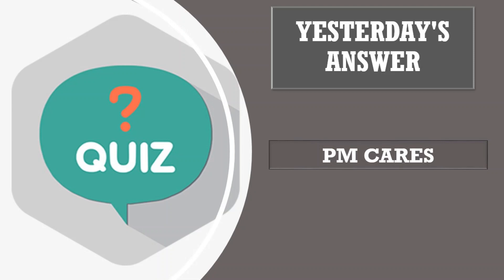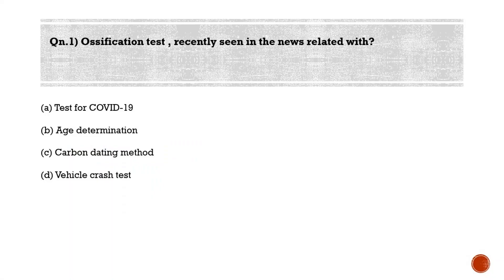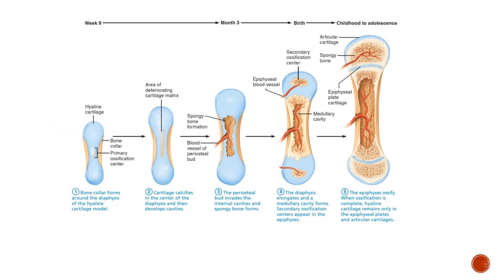We'll now start today's session. First question: the ossification test, recently seen in the news, is related to — option A: test for COVID-19, option B: age determination, option C: carbon dating method, option D: vehicle crash test. The correct answer is option B — it is an age determination test.